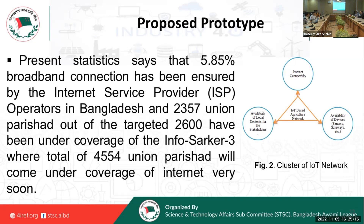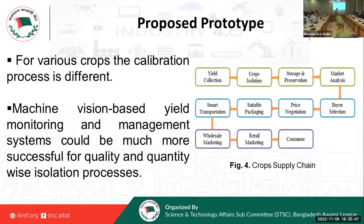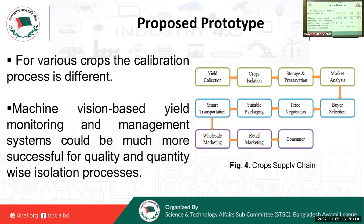Availability of devices such as sensors and gateways is also needed. For the crops production scene, the stages covered include season selection, land selection, positioning mapping, soil cultivation, sowing process, irrigation process, fertilization, herbicide, pesticide, fungicide, and harvesting. Then the crops supply chain follows: after cultivating the products, we move to yield collection, crops isolation, storage and preservation, market analysis, buyer selection, price negotiation, suitable packaging, smart transportation, wholesale marketing, and retail marketing to the consumer. For all these aspects, we will implement a web-based or IoT-based system to cover everything.